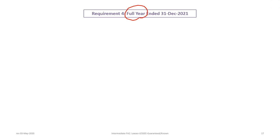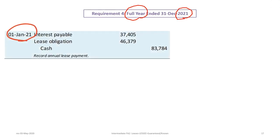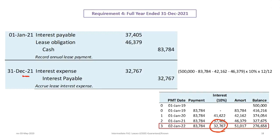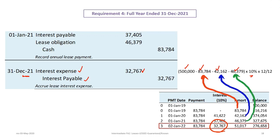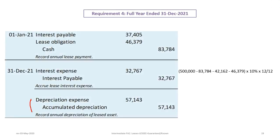For the full year ended December 31, 2021: on January 1, debit interest payable $37,405 and lease obligation (the difference) and credit cash $83,784. At December 31, 2021, debit interest expense and credit interest payable for $32,767, calculated based on the initial PV minus amortization of the first, second, and third payments times 10%. The amortization table confirms this balance. Depreciation expense of $57,143 is recorded again: debit depreciation expense, credit accumulated depreciation.